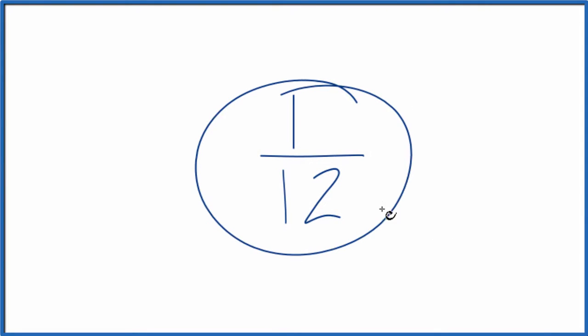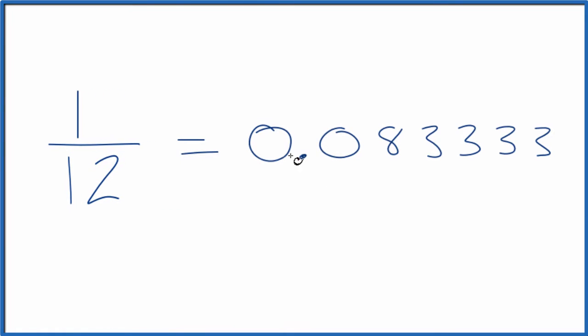Let's write the fraction 1/12 as a decimal. There's a few ways you could do this. First off, you could just use your calculator, 1 divided by 12, and that equals 0.083333.